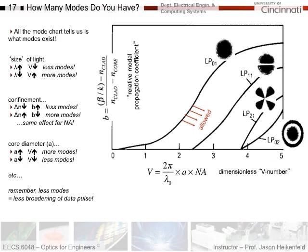Last, let's look at core diameter. You could vary some other parameters, but we'll just do one more. Core diameter, meaning the diameter of the core of the fiber. If my core diameter goes up, then V goes up, and I get more modes. Well, that makes sense, too. If I have a bigger core, there should be more ways for the light to propagate down it. And of course, if A goes down, V goes down, and I get less modes. So again, remember, less modes is desirable, but it means less broadening of our data pulse.